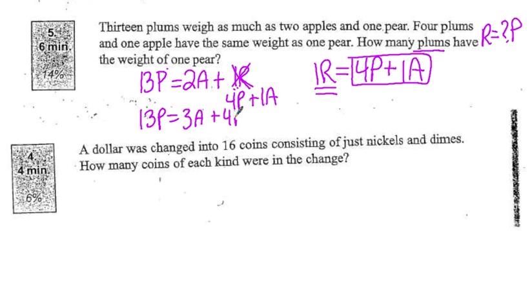Now I want to try to get one of these variables by itself. I know that I have p on both sides of my equation, so I'm going to get rid of this 4p by subtracting it, which means I would subtract it over here. And so my new equation is 9p equals 3a.